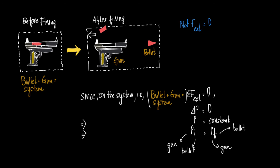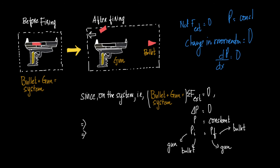If the total net external force acting on the system is zero, then we can say that ΔP = 0, or the change in momentum is equal to zero. When change in momentum is zero, P is a constant — because if dP/dt = 0, it means P is a constant. And if P is a constant, then P_initial = P_final.